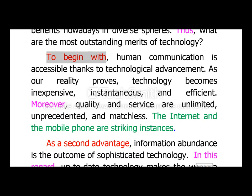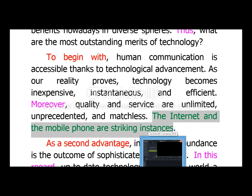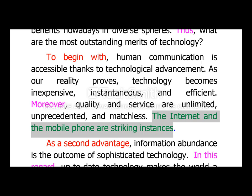Then we give an example. An example is very important in writing because it helps to convince the reader concerning a specific idea. Here we speak about the internet and the mobile phone as striking instances. So, how many sentences do we have in this paragraph? We have three sentences plus an example: one topic sentence, two supporting sentences, and then an example.